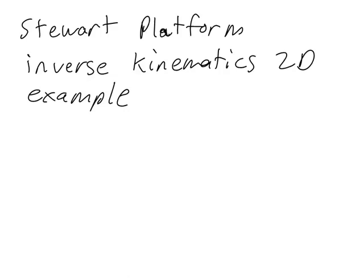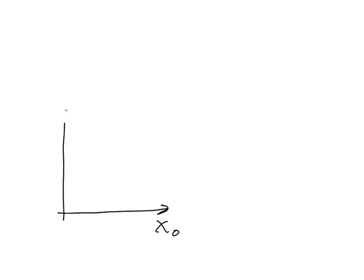I'm now going to show you an example of how we use the equations derived in the last video to do inverse kinematics for a two-degree-of-freedom, two-dimensional Stewart platform. I'm going to start off by drawing the base frame, then draw in some of the design characteristics — the locations where the links are fixed to the base and the locations where the links are fixed to the platform.